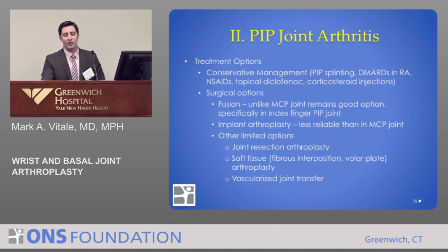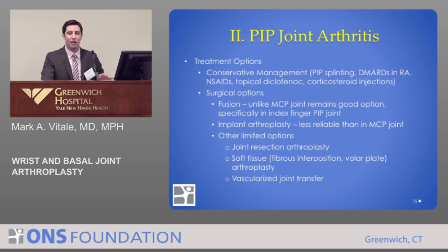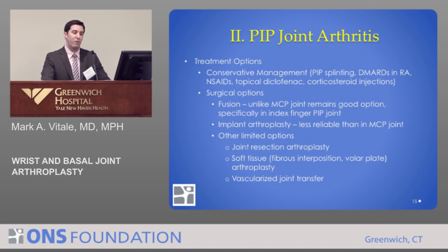PIP joint arthritis is an area where we're really getting to less and less gain for joint replacement arthroplasty. But it is an option for patients who have failed conservative management. Fusion is actually a reasonable option here in the PIP joint — unlike the MCP joint — as it can place the finger in a functional position while still preserving grip and pinch function. Other limited options include joint resection arthroplasty interposing soft tissues, or transferring joints from other parts of the body, like the toes.